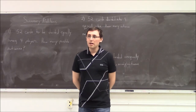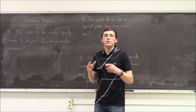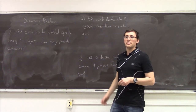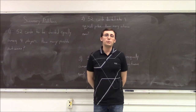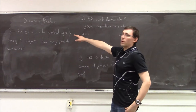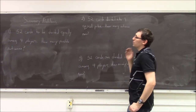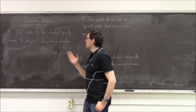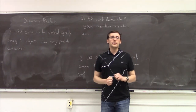Hello again. This is our summary of combinatorial problem-solving strategies — I call it 'summary problems' or 'farewell to combinatorics.' After this lecture, we begin talking about probability. Consider the first question: we have 52 cards and they have to be equally divided among four players. How many outcomes are possible for this situation? Please pause the video and think about this problem yourself.